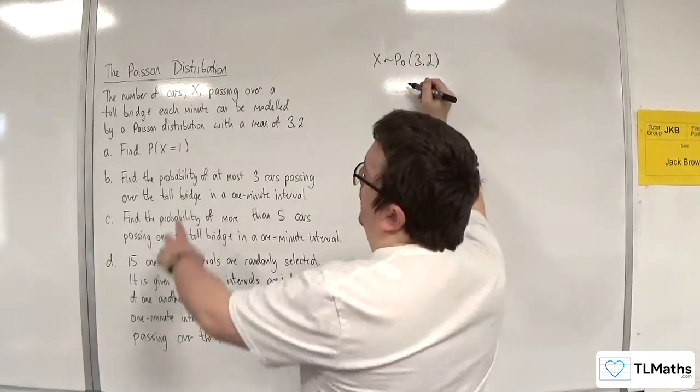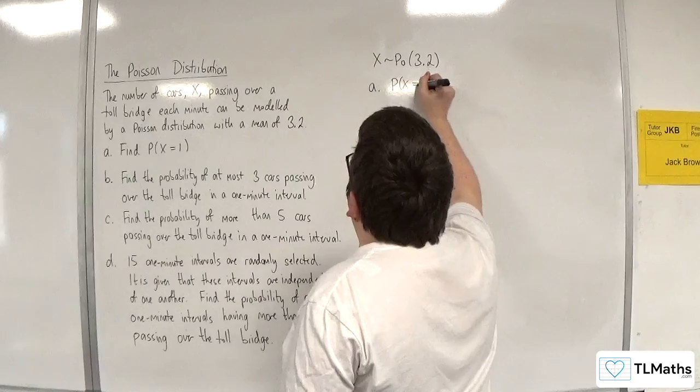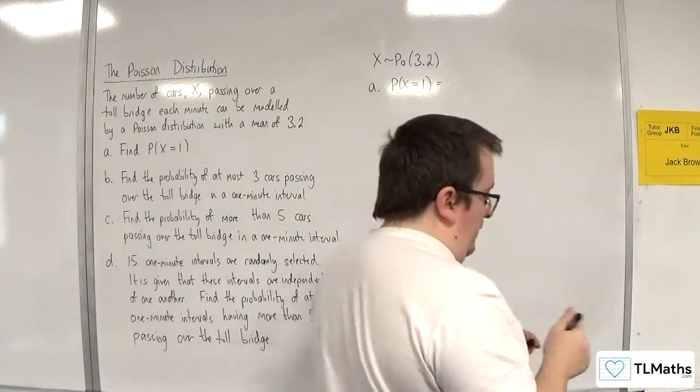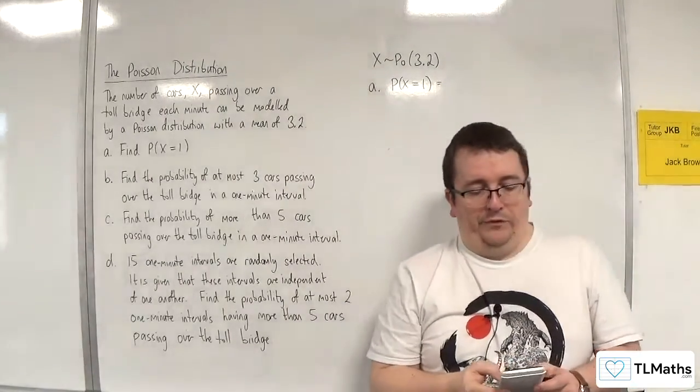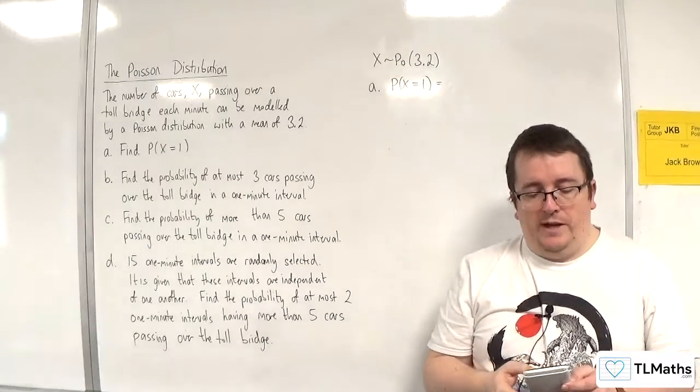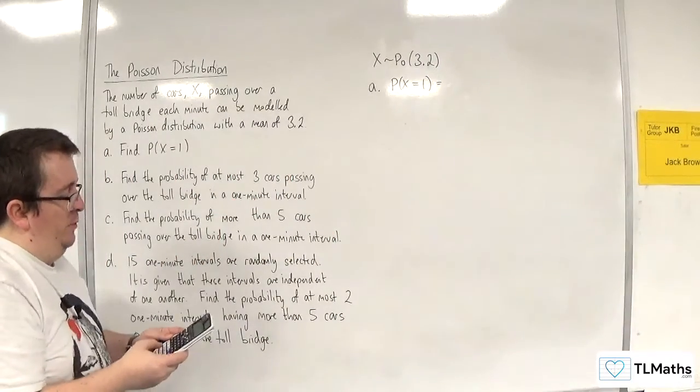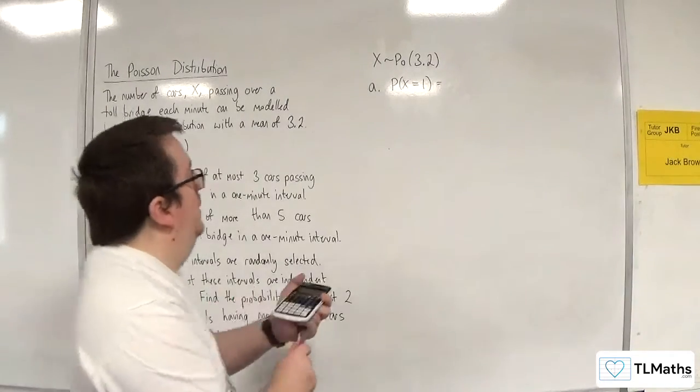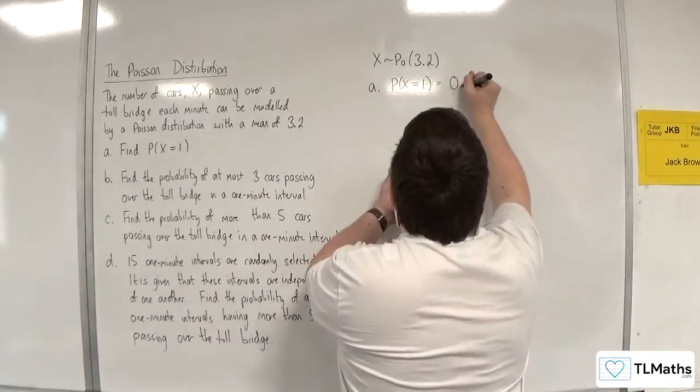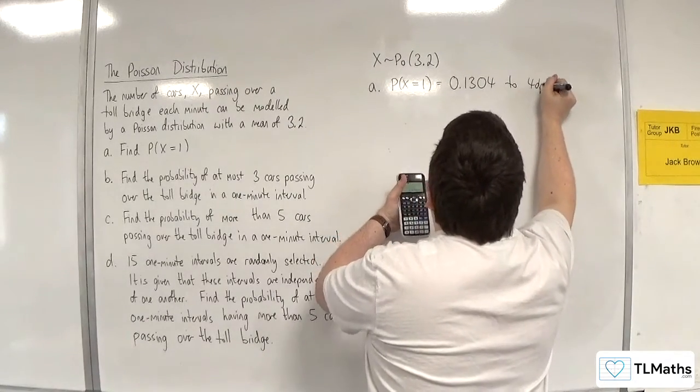Part A: find the probability of x being equal to 1. I'm going to go straight to my calculator for that one. So I'm going to go to menu, number 7, and then I scroll down to Poisson PD. I'm going to go to variable, put in x as 1 and lambda as 3.2. We should get 0.1304 to 4 decimal places.